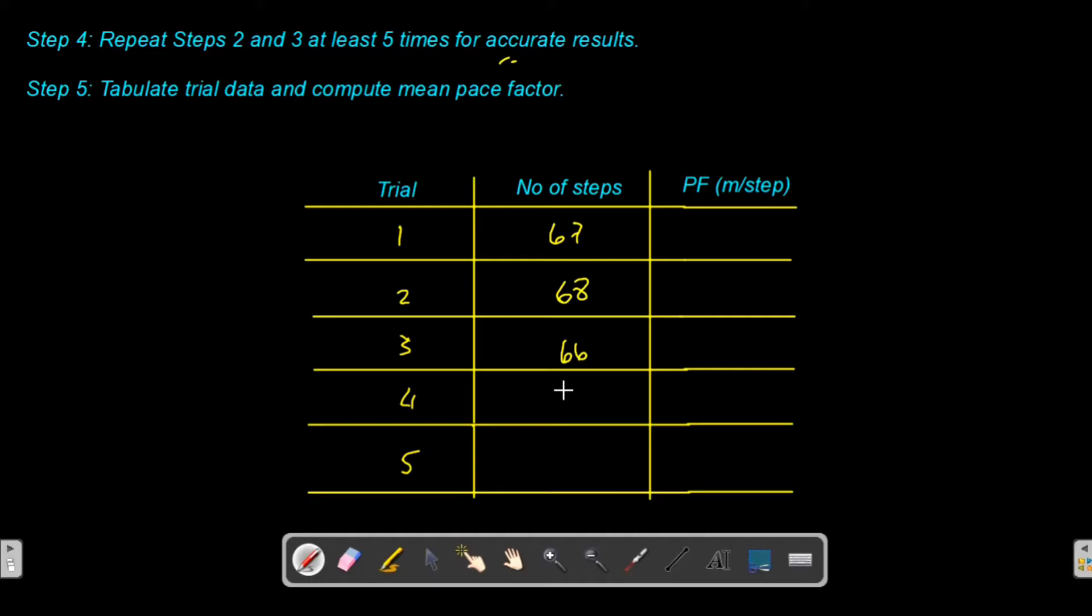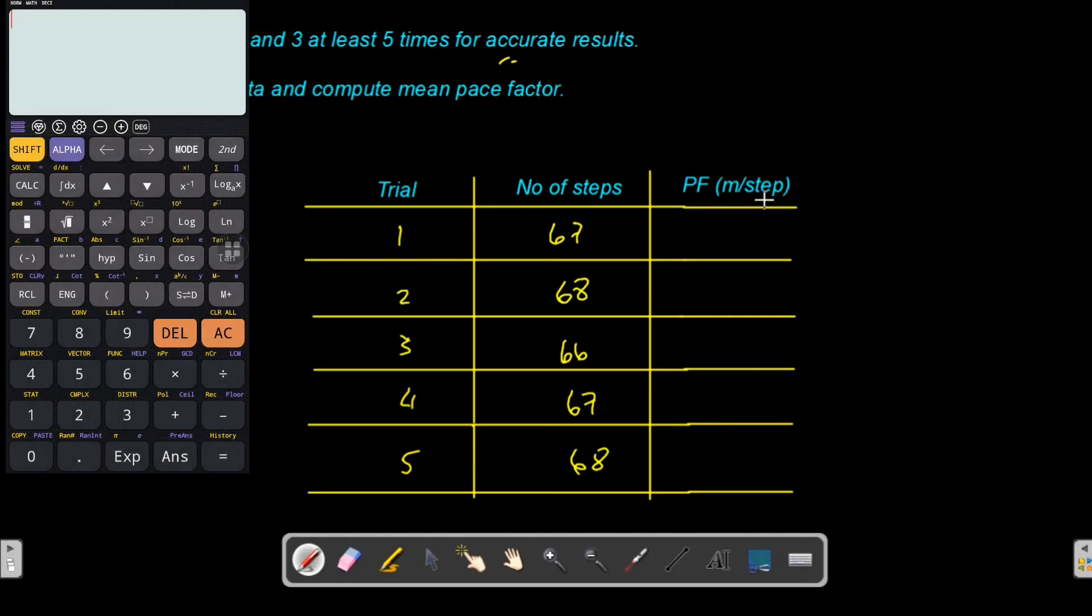In calculating your pace factor, you just have to divide the measured line divided by the number of steps. Pace factor will have a unit of meters per step. For trial 1, you compute 50 meters divided by 67, that's 0.746 meters per step.